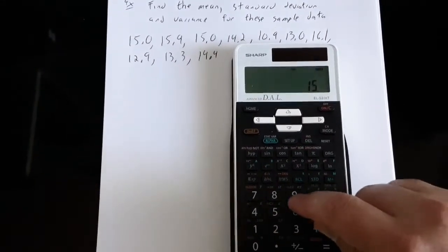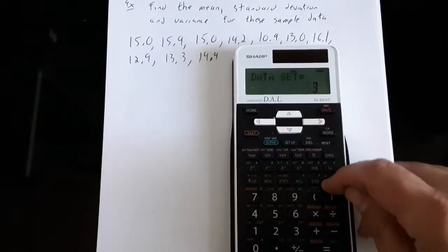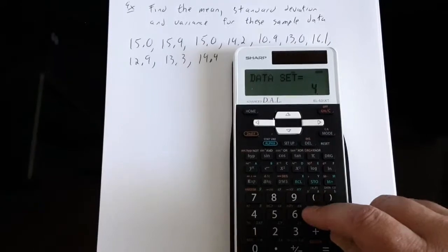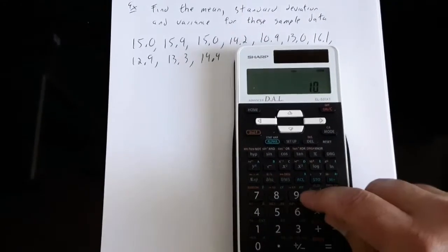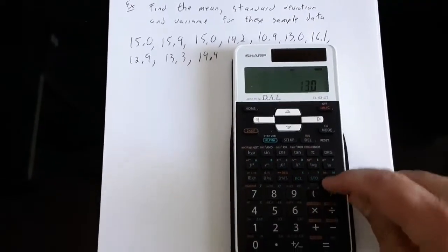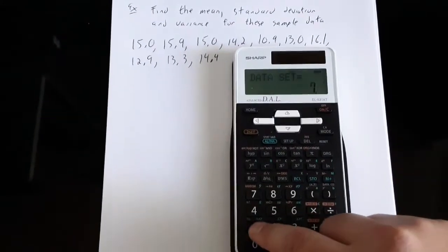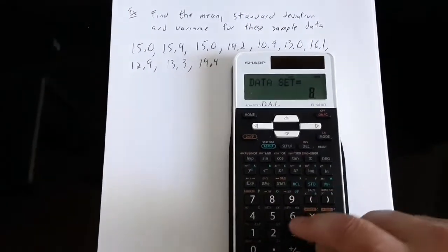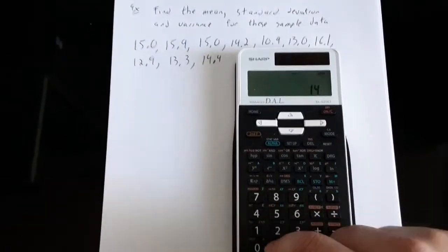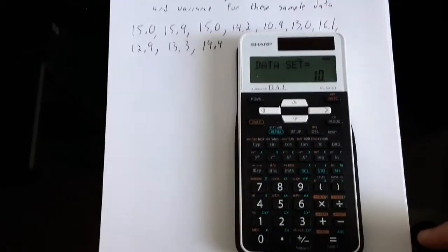So 15.9, M plus, 15.0, M plus, 14.2. And each time M plus, and each time it will confirm how many things the calculator has in its memory. So 13.0, M plus, 16.1, M plus, we have 12.9, we have 13.3, and we have 14.4. So now it has 10 things in the calculator's memory. Our data set is 10.